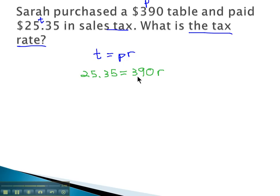Replacing each variable with what we know gives us an equation that we can quickly solve. Divide both sides by 390. And r, the rate, using our calculator, 25.35 divided by 390 is 0.065.